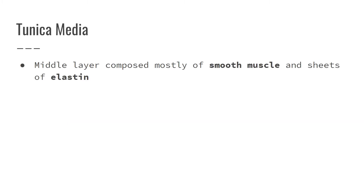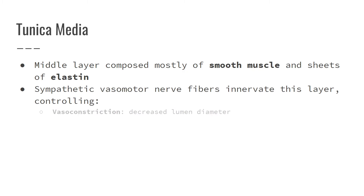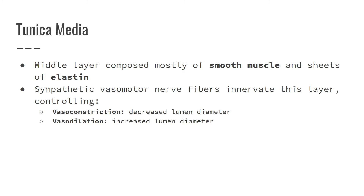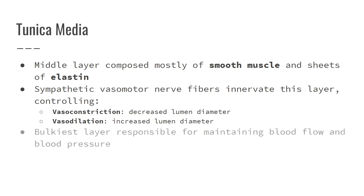The tunica media is our middle layer, composed of smooth muscle and some elastic fibers. This layer regulates blood flow and blood pressure because it can cause vessels to constrict and dilate. Vasoconstriction means the blood vessels become smaller, which increases blood pressure, whereas vasodilation means the blood vessels get bigger, which lowers blood pressure. It is the bulkiest layer, responsible for maintaining blood flow and blood pressure.